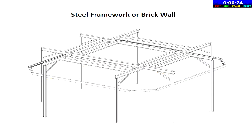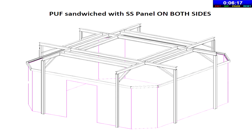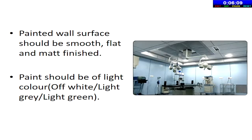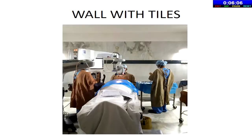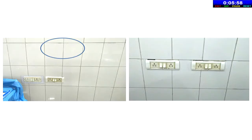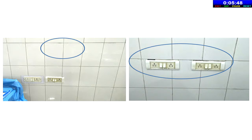For walls, initially a framework is laid down, either of brick or steel, upon which PUF sandwiched stainless steel panels or EGP panels are mounted and coated with antibacterial paint. Paint should always be of light color. Tiles can also be placed if there is a budget issue, but the grouting in tiles can harbor bacteria and fungus, so care must be taken to clean tiles and grout regularly. Any gaps should be sealed and waterproofed immediately.